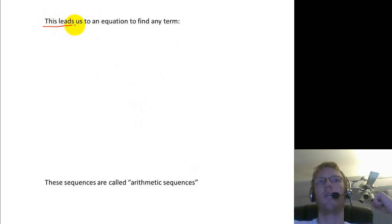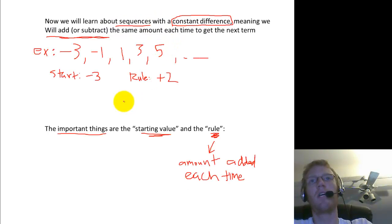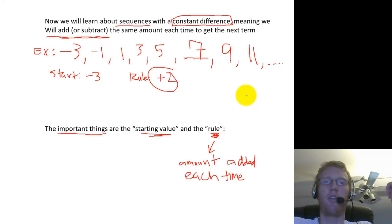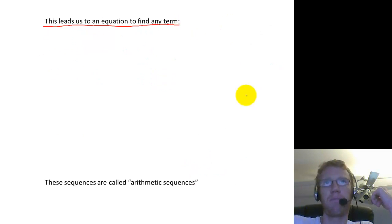Okay? So this leads us to an equation to find any term. Let me go back one. Suppose you wanted to find the next term in the sequence. You would just follow the rule, and then you would say that the next term is going to be 7, and then 9, then 11, and you could keep going for a long ways. But what if I said, what's the 500th term? You wouldn't want to sit there and add 2 over and over and over and over. You might want to have a shortcut.